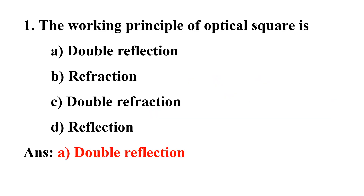First question: What is the working principle of optical square? Option A: double reflection, Option B: refraction, Option C: double reflection, Option D: reflection. The answer is double reflection. The working principle of optical square is double reflection.